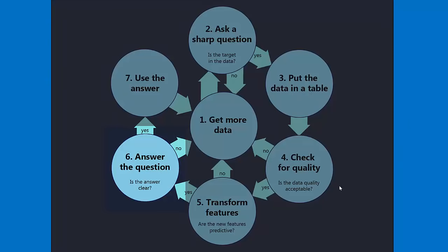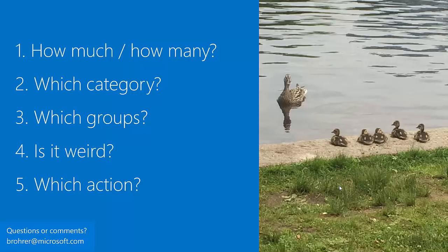Now you've taken your data, asked a sharp question, put it in a table, checked it for quality, done your feature engineering — and now you're ready to answer your question. What you're looking for is whether that answer is clear and whether it lets you do what you want to do. This is where machine learning comes in. It uses statistics to look at patterns in the past to predict patterns in the future.